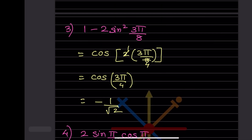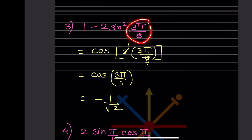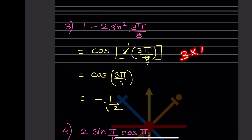Now: 1 - 2sin²(3π/8). Using 1 - 2sin²θ = cos2θ, with θ = 3π/8, we get cos(2·3π/8) = cos(3π/4). Converting: 3π/4 = 3×180/4 = 135 degrees.